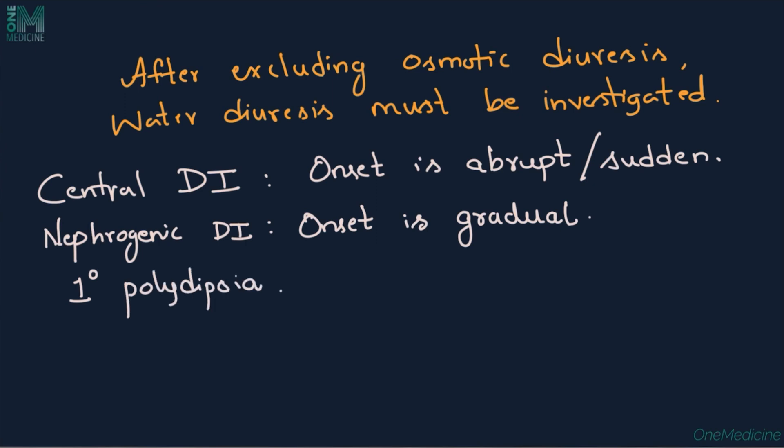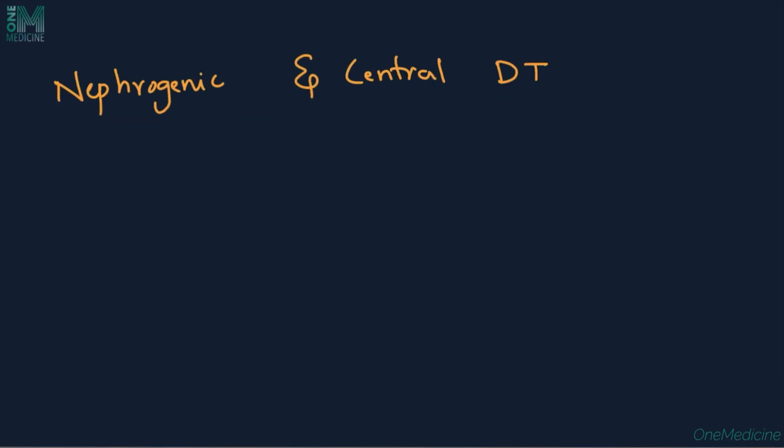Patients with primary polydipsia are more vague in dating the onset of their symptoms. Nephrogenic and central diabetes insipidus are characterized by severe and frequent nocturia, a feature that is typically absent in patients with primary polydipsia.